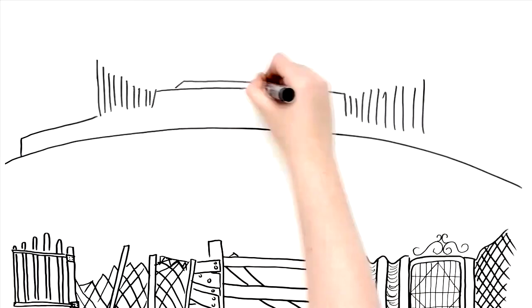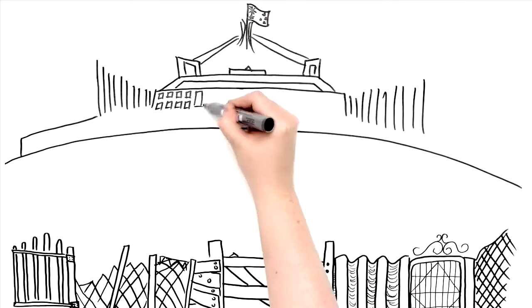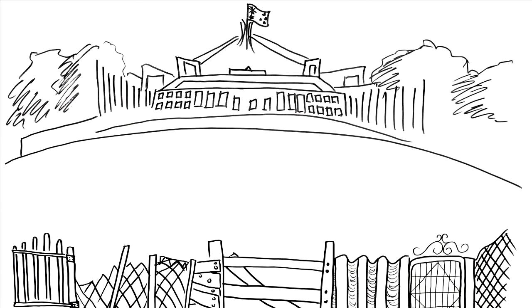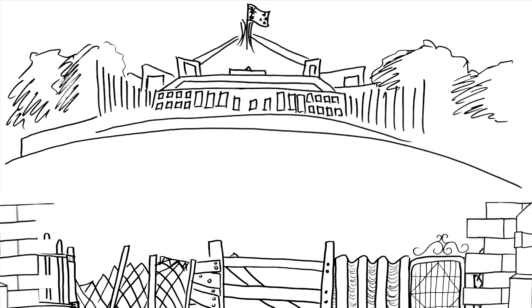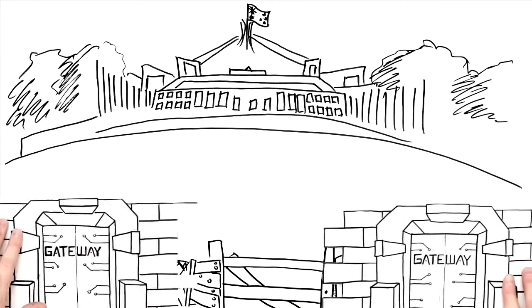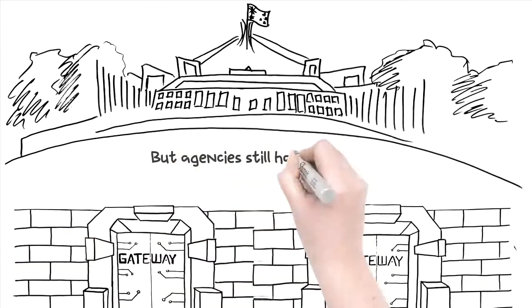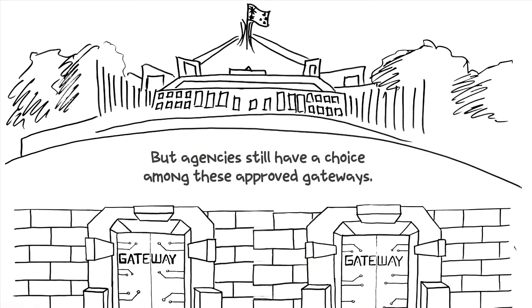The Federal Government has introduced a gateway consolidation program to improve cyber security for government. The goal is a smaller number of well-managed gateways available to more agencies. But agencies still have a choice among these approved gateways.